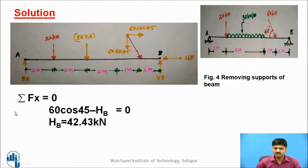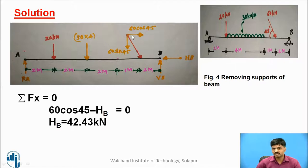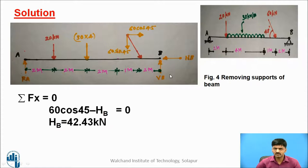Apply summation Fx = 0 — that is, all horizontal forces. Only two horizontal forces are present: 60 cos 45 on the right-hand side (positive by sign convention) minus HB = 0. Calculate the value of HB: HB = 42.43 kilonewtons.